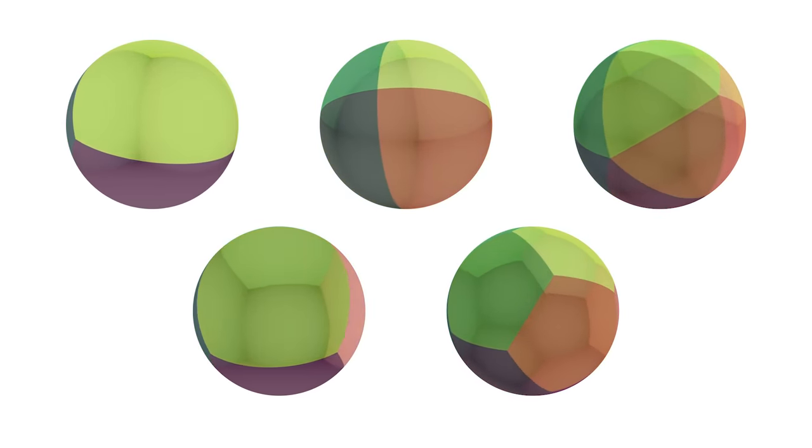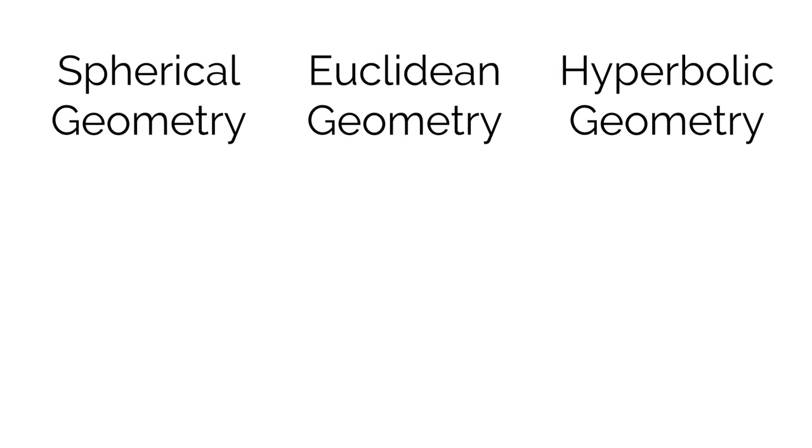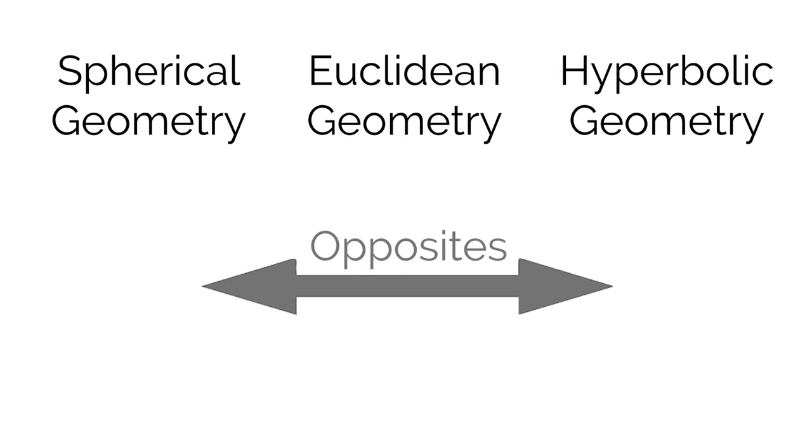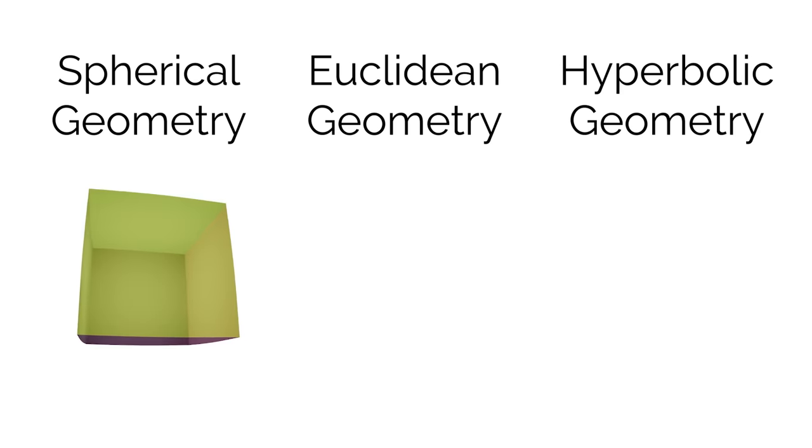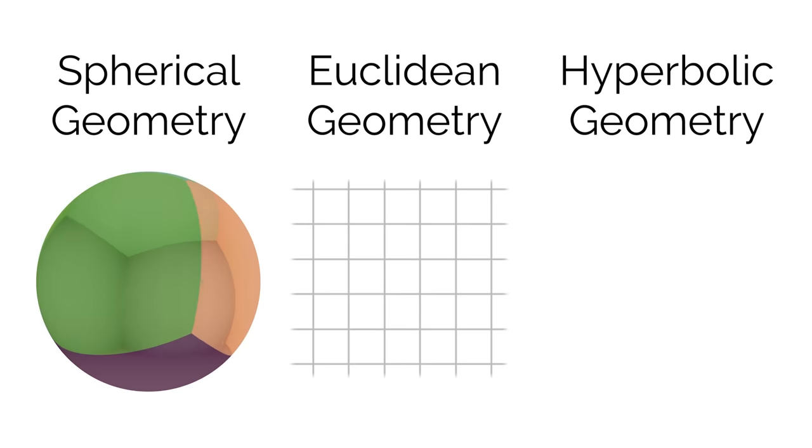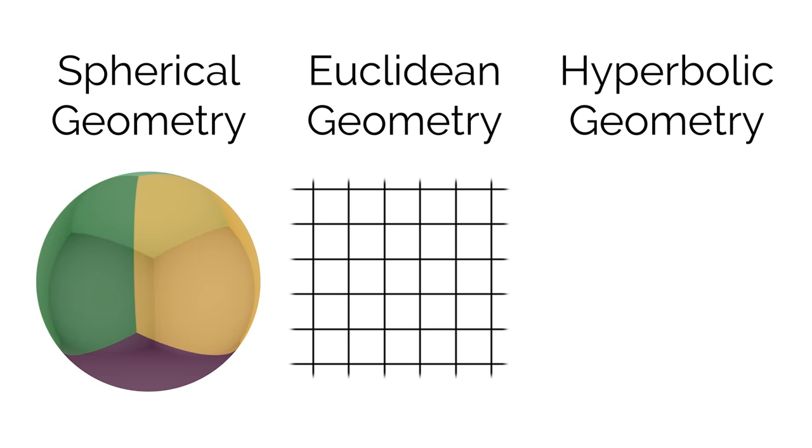So now let's move on to hyperbolic space. The theme you'll see for the rest of the video is that for everything weird about spherical geometry, the opposite is true for hyperbolic geometry. For example, you just saw that we could have fewer squares around each vertex compared to Euclidean space. So in hyperbolic space we can have more.